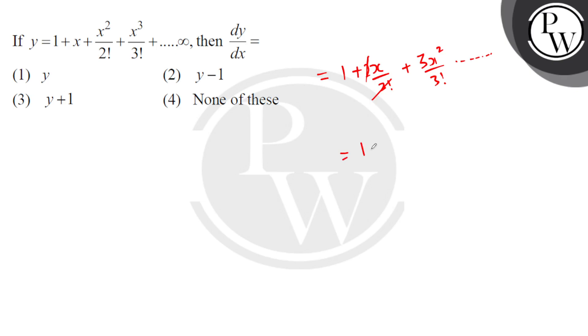So ultimately we have 1 plus x. 3 factorial is 3 into 2, so x squared by 2 and so on. So ultimately 2 is 2 factorial. So dy by dx is equal to y.